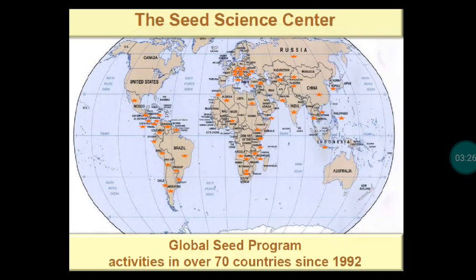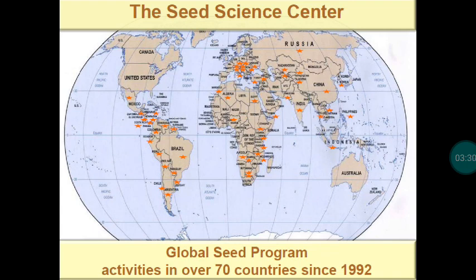At the global level, more than 70 countries are involved in seed production, shown in orange on the map. They are producing seeds not only to fulfill their own requirements but also producing excess quantities that are exported to other countries for foreign exchange earnings, which strengthens the financial position of those countries.